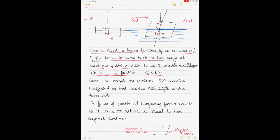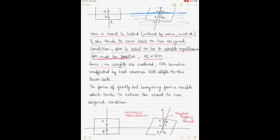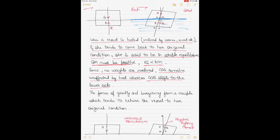The distance from keel to the center of gravity is KG. GZ is called the righting lever, which brings the vessel back to the upright condition. For this righting couple to work, KG must be less than KM — G must be below M. Since no weights are being shifted, the center of gravity remains unaffected by the heel, and only the center of buoyancy shifts. The forces of gravity and buoyancy form a couple that tends to return the vessel to upright.